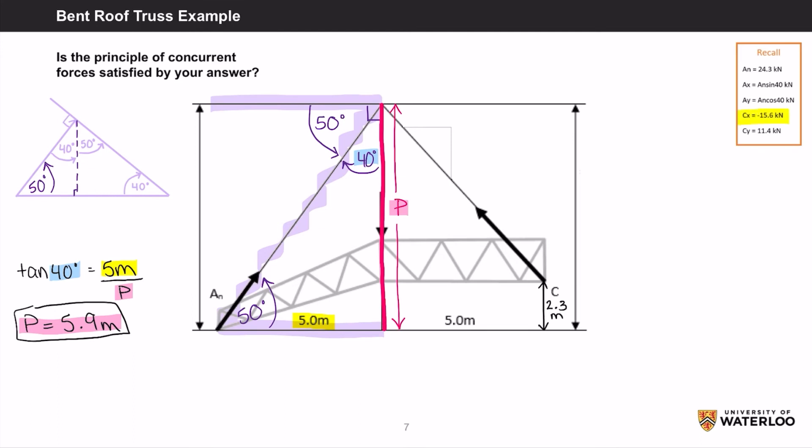To find the height for the right side of the diagram, we can use CX and CY as distances instead of forces as they are also the ratio of force C. Using the ratio of 11.4 over 15.6 or also known as 19 over 26, we can multiply it by the distance to see what the height would be in 5 meters. So P equals 19 over 26 times 5 meters. Don't forget to add 2.3 meters after as the right side of the diagram is slightly higher than the left.